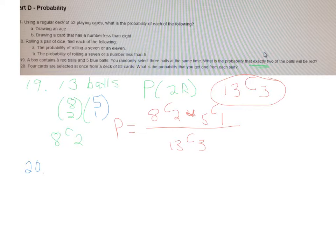So, question 20. Four cards are selected at once from a deck of 52 cards, and we want the probability that you get one from each suit.